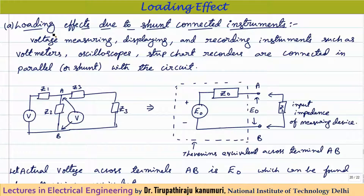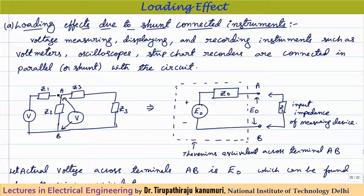These effects can be either due to shunt-connected elements or series-connected elements. Starting with loading effect due to shunt-connected elements: voltage measurement, displaying, and recording instruments such as voltmeters, oscilloscopes, or strip chart recorders are generally connected across the circuit — that is, connected in parallel.